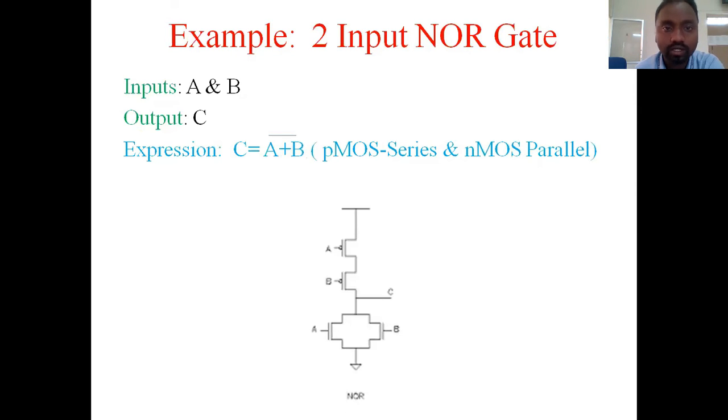Next we go to two input NOR gate. When we say NOR gate, there are two inputs A and B and output C. C equals to A plus B whole bar. When we say plus, it is addition. If we say addition, that means pMOS in series and nMOS in parallel.